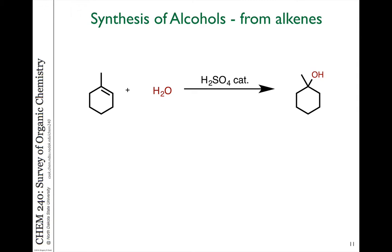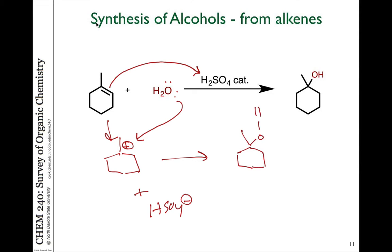One of the ways that we've seen previously to make alcohols is the hydration of an alkene. This reaction occurs by first protonation of the alkene to form a carbocation. That carbocation, the byproduct would be HSO4 minus if we're using sulfuric acid. In the next step, the water molecule would then add to the carbocation to generate a hydronium ion.